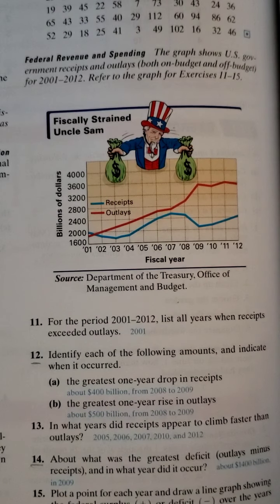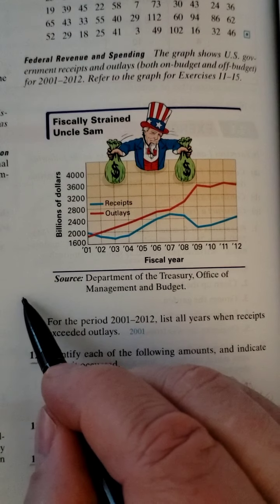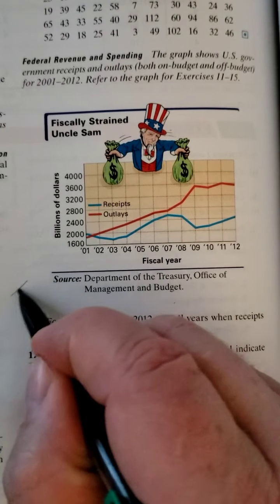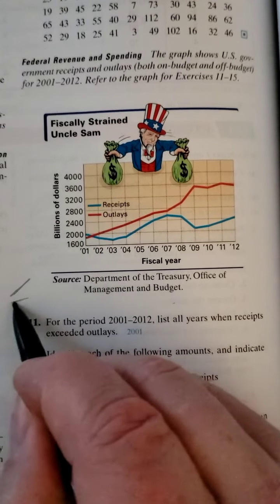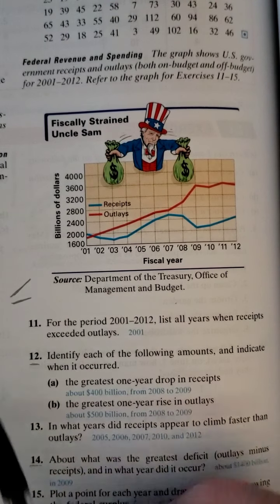Essentially, you're just going to want to look to see which one grows faster. If you ask, is that growing faster than that? And the answer is yes — if it's going uphill faster, then that's what they're talking about. So we want to look at any particular year where the blue line is going uphill faster than the red line. We could just take it year by year.